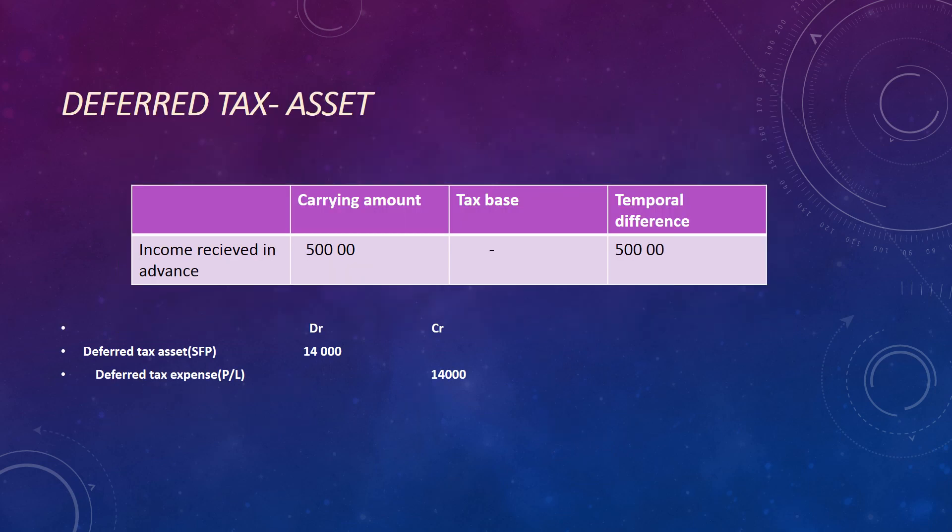The other type of deferred tax is a deferred tax asset. This arises when the carrying amount of an asset is less than the tax base, or when the carrying amount of a liability is greater than the tax base. In this example, the carrying amount of a liability is actually more than the tax base of the liability, which will result in a deferred tax asset.